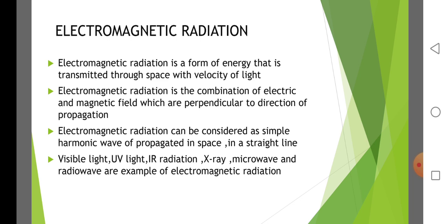Electromagnetic radiation. Electromagnetic radiation is a form of energy that is transmitted through space with the velocity of light, where the velocity of light is 3 × 10⁸ meter per second. Electromagnetic radiation is the combination of electric and magnetic fields which are perpendicular to the direction of propagation.